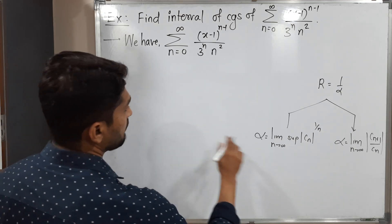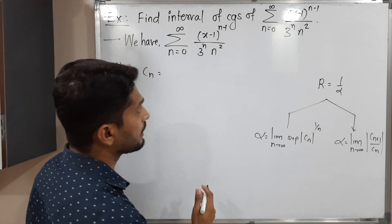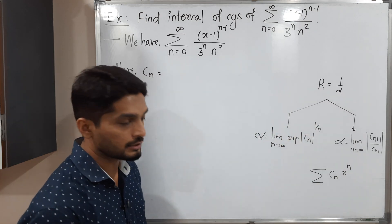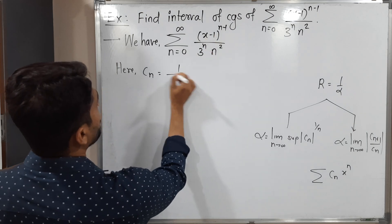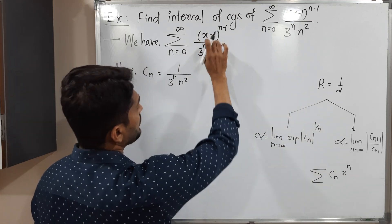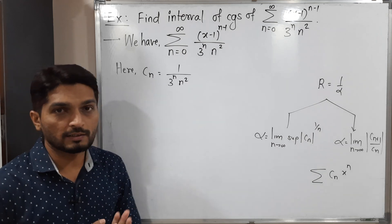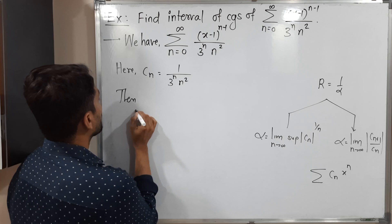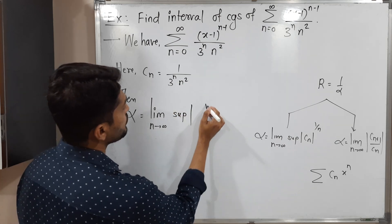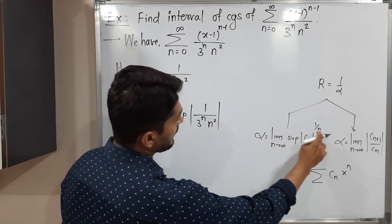Here the power is n minus 1, whereas the standard form is simply n. So I will go for the first formula. Now, cn is the coefficient of the x raised to n term. Here the coefficient is 1 divided by (3 raised to n times n squared). So this is our cn.